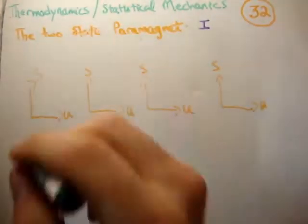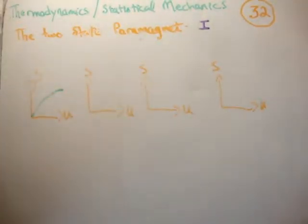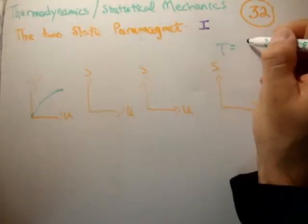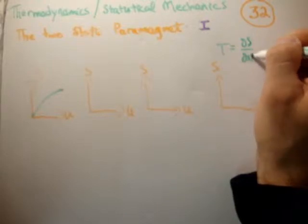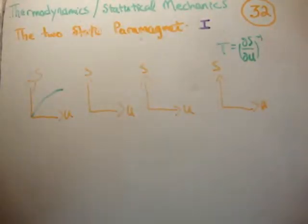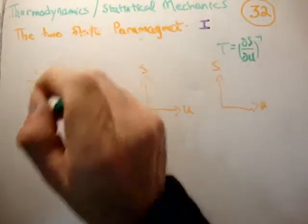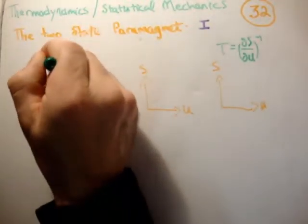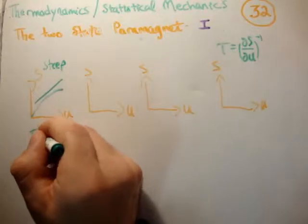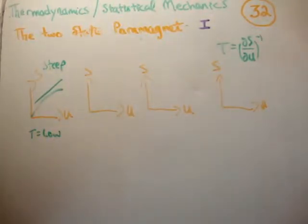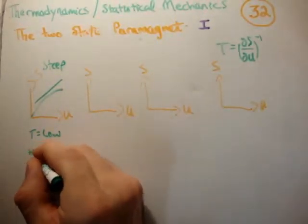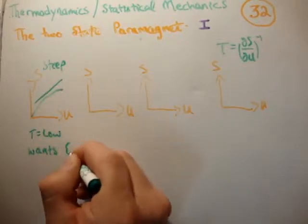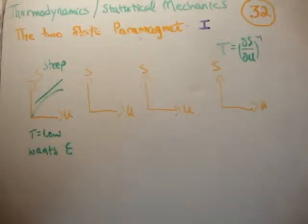We know that T is equal to the inverse of dS/dU. Looking at the first graph type, the slope dS/dU is very steep, so the temperature is low. A steep slope means low temperature, and the system wants energy. This is a normal system — cold systems want energy, which is what we consider normal behavior.